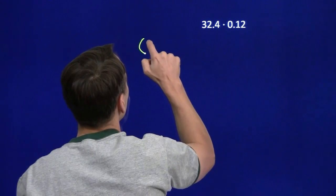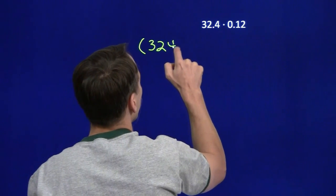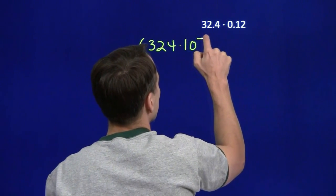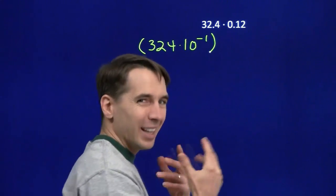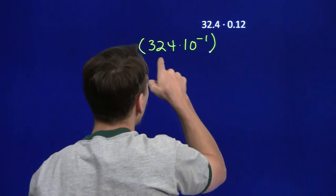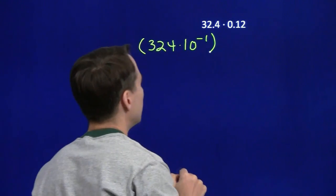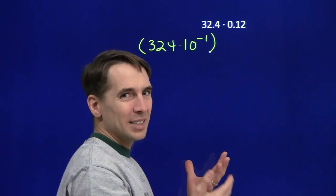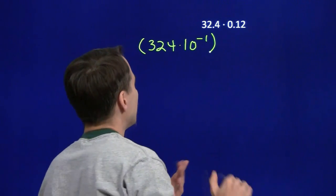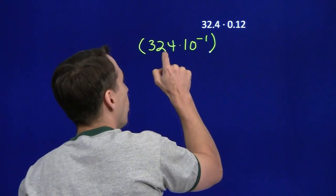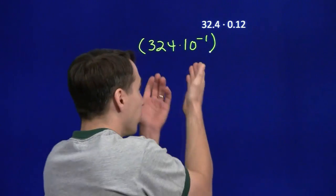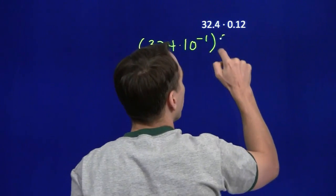32.4, that's 324 times 10 to the minus 1. And we can check that. I like to check my intermediate steps. 324 times 10 to the negative 1, multiply by 10 to the negative 1, it's the same thing as dividing by 10, which means moving the decimal point 1 place to the left, which is 32.4. So this is 32.4.